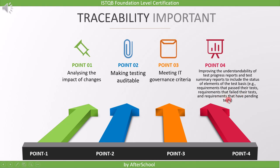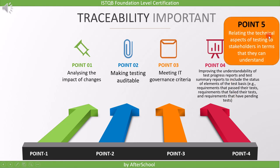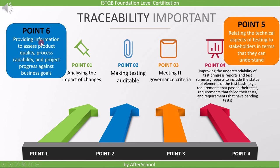This point is self-explanatory. Fifth point is relating the technical aspects of testing to stakeholders in terms that they can understand. Since we provide the traceability, we can generate different types of matrix and provide it to stakeholders. Last point is providing information to assess product quality, process capability, and project progress against business goals. Since we have different matrixes, we can assess product quality and its process.